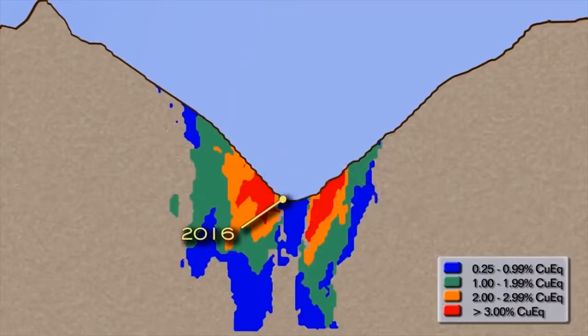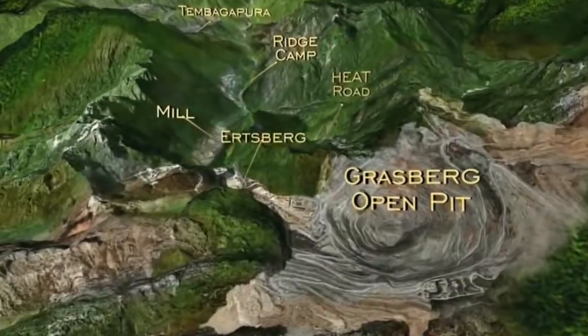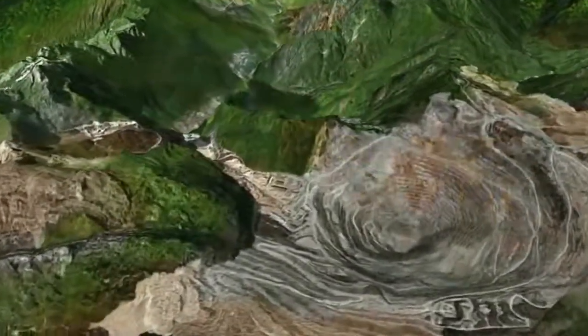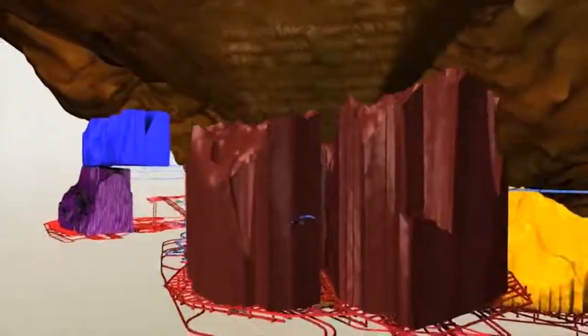Directly below the Grasberg pit is the Grasberg block cave ore body. The Grasberg open pit is one of three mines in the district currently in production. To see the others and the real future of the operation, we move below the surface.